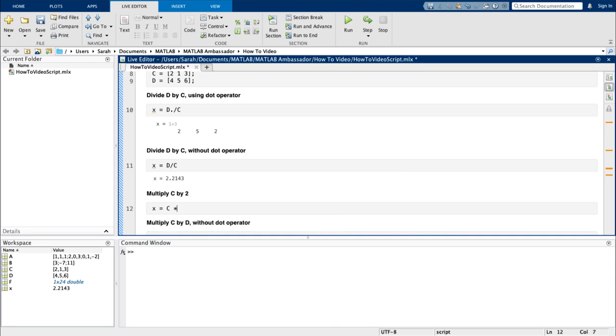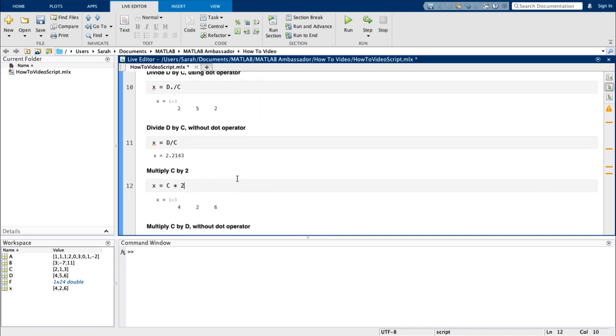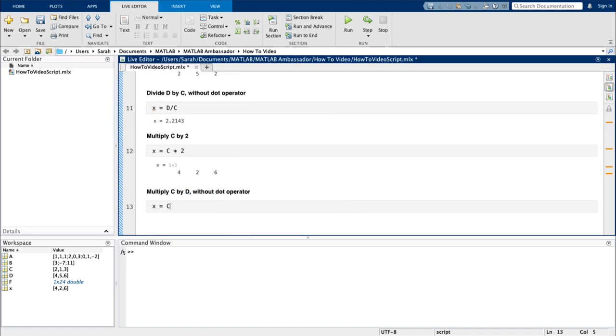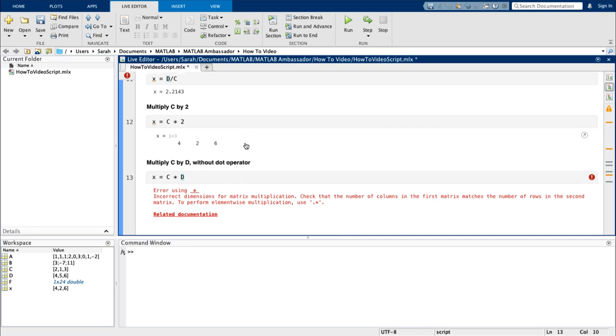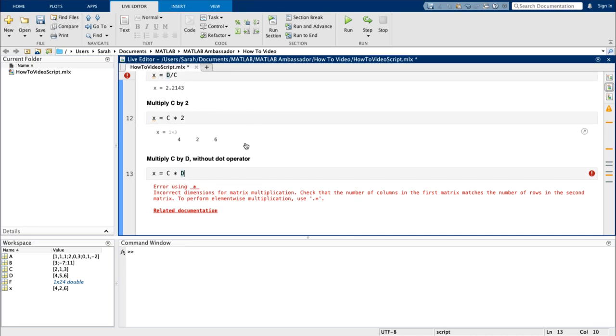How about if I wanted to multiply c by 2? The dot operator is not necessary in this case, since 2 is a scalar. But what if I wanted to multiply c by d? I would need the dot operator, since both c and d are vectors. Look what happens if I omit it. This time, I got an error instead of the wrong answer, because these vectors aren't the right size for this kind of matrix multiplication.